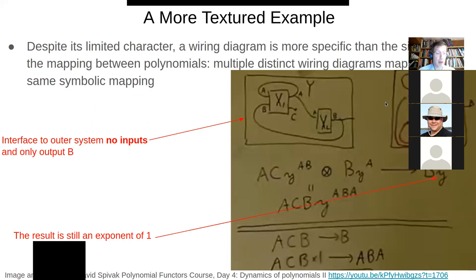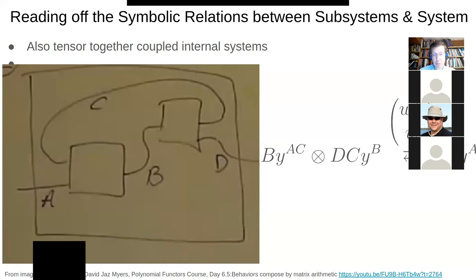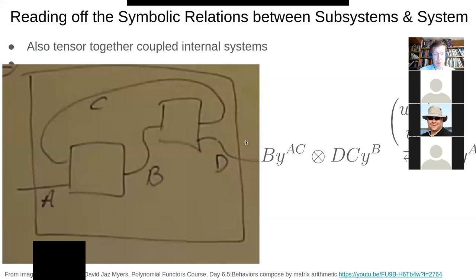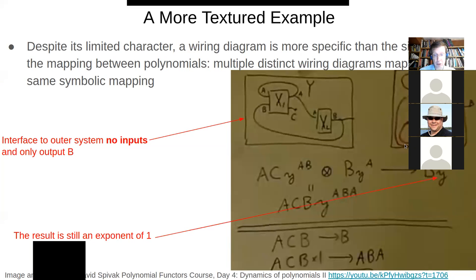It's just, it's kind of the singleton set one. If we have no outputs, we would have one here, not zero. Right. So that's one of the reasons you have this.